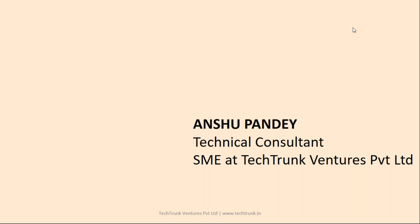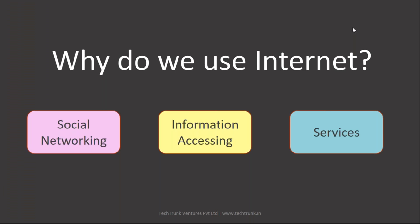The answers from the audience include social networking, email, Google, booking tickets, and online banking. So the uses of the internet in everyday life come down to three categories: social networking, information gathering and accessing, and providing and accessing services.